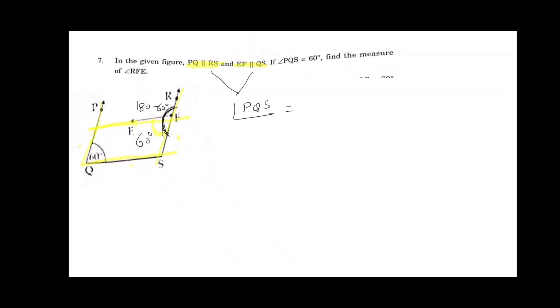So angle PQS is equal to angle EFS, that is 60 degrees. As linear pair condition, angle EFS and angle EFR or RFE, which is given in the question, are linear pair. So angle RFE equals 180 minus 60 degrees, which gives 120 degrees is the answer.